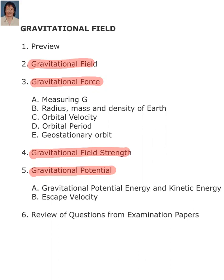Newton realized that if he could understand the motion of the moon around Earth, he would be able to understand the movement of all the planets around the sun. Newton's law of gravitation is given by the formula F equals G times big M times small M over R squared.